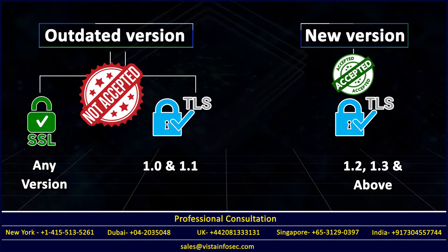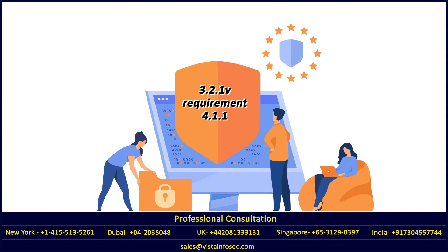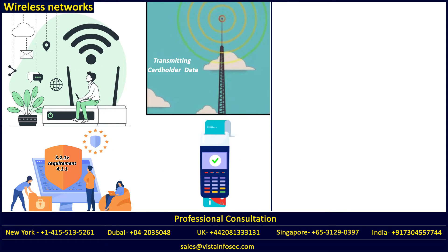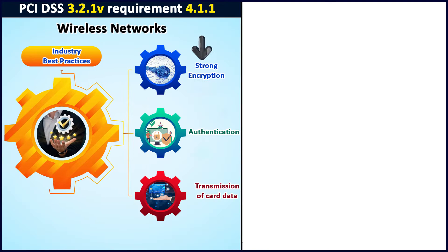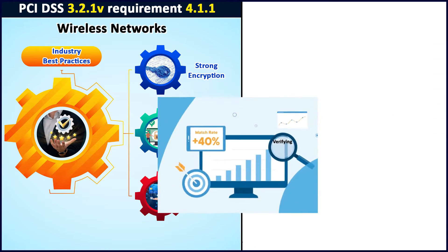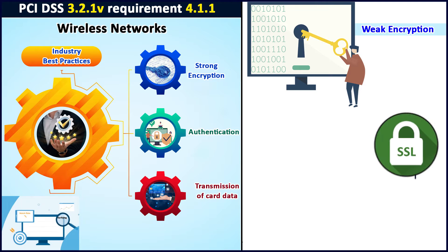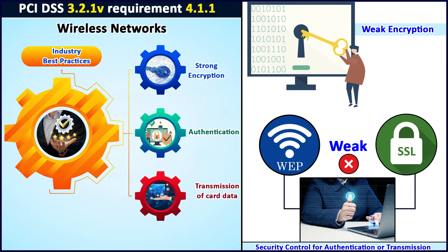Outdated versions like SSL and TLS version 1.1 are not acceptable in PCI DSS 3.2.1. Requirement 4.1.1 talks about identifying all wireless networks transmitting cardholder data or connected to the cardholder data environment, and verifying whether industry best practices are used for implementing strong encryption for authentication and transmission. It also addresses verifying that weak encryption such as SSL or WAP is not used as a security control.